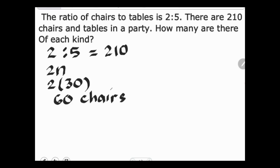Now for the tables, we have 5 times n. Write 5 and substitute the value of n which is 30. 5 times 30 is 150. So there are 150 tables in the party. The total is 210, 60 chairs and 150 tables.